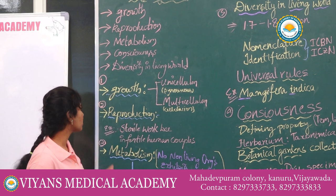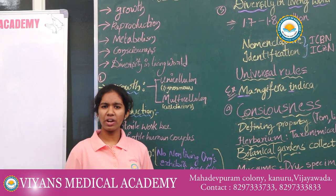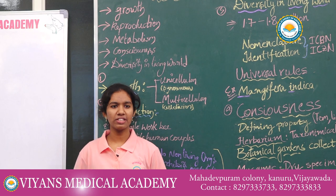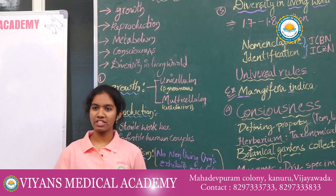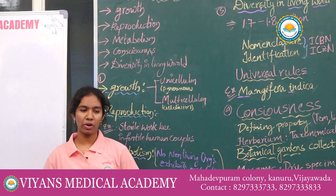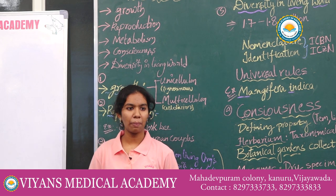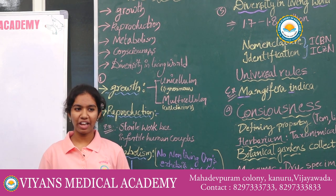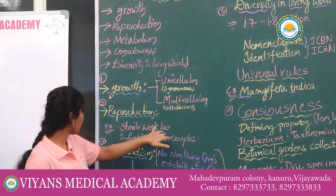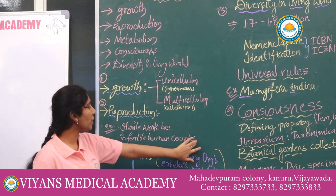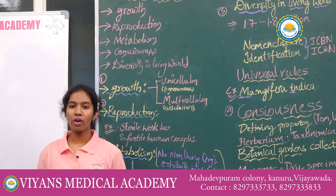Next, we move to reproduction. Reproduction is a characteristic of living organisms. In multicellular organisms, reproduction is sexual reproduction. Unicellular organisms also reproduce. But some living organisms cannot reproduce — for example, sterile worker bees or an infertile human couple. So it is not a defining feature of a living organism.